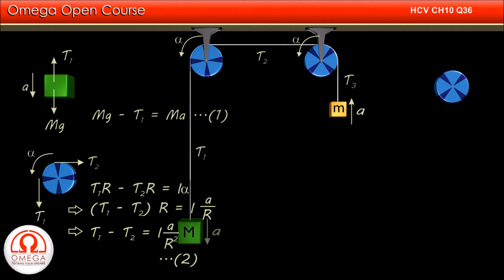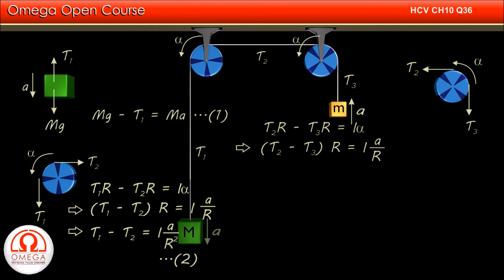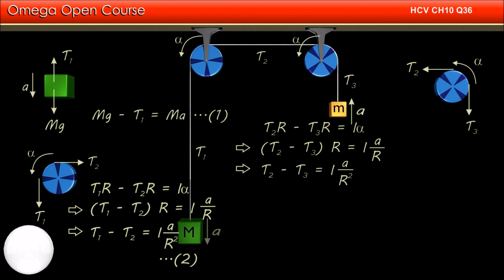In the free body diagram of the second pulley, tension T2 is pulling the pulley towards the left and tension T3 is pulling it downwards. The pulley is rotating in the anti-clockwise direction with angular acceleration alpha. Net torque on the pulley is T2 into r minus T3 into r, which must be equal to I into alpha. Taking r common and putting alpha equal to a divided by r, we get T2 minus T3 is equal to I divided by r squared into a.